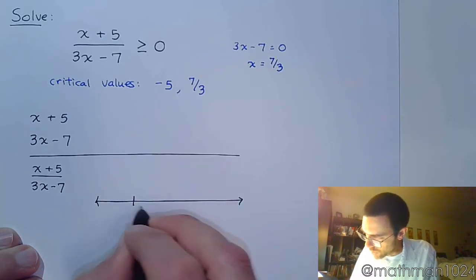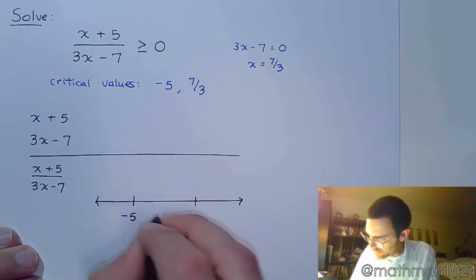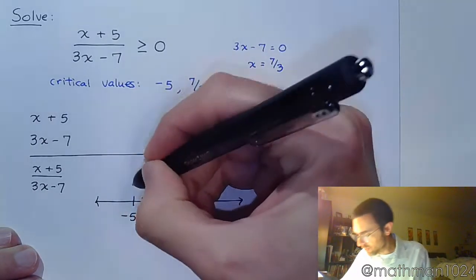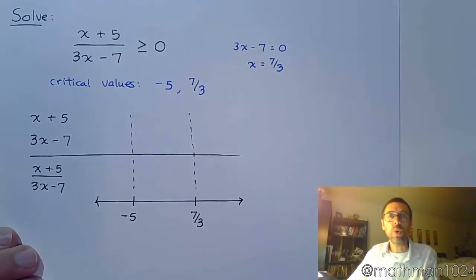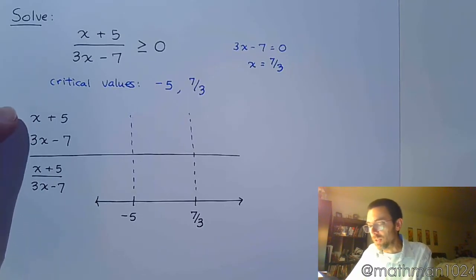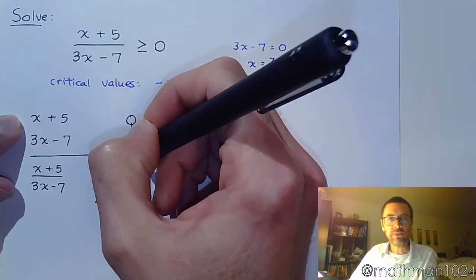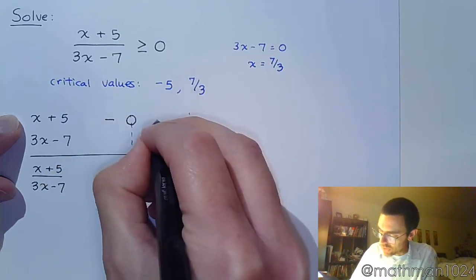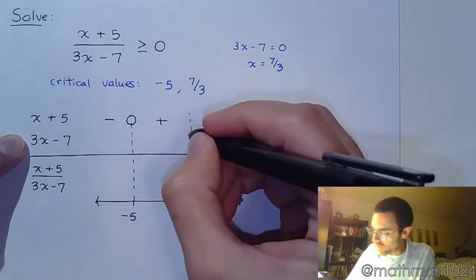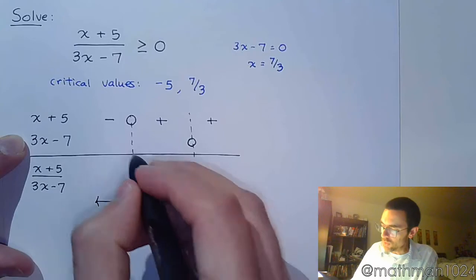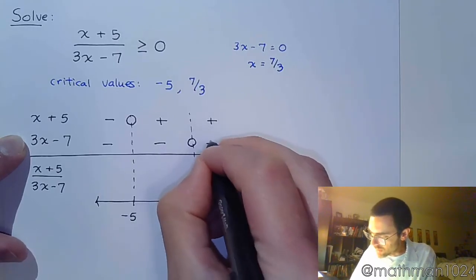We draw the number line and put our two marks for our two critical values. These are already in order: −5 and 7/3. The sign tables here are no different from the ones we did for quadratic inequalities. For the factor (x + 5), his critical value is −5, so he's zero right there. Since it's a positive lead coefficient, he's negative on the left, then crosses and becomes positive the rest of the way. For (3x − 7), with critical value 7/3, he's negative leading up to it, hits the critical value where he crosses the x-axis, and then is positive after that.